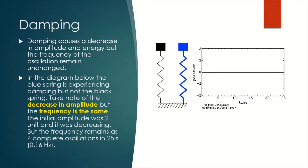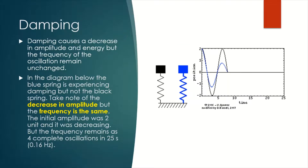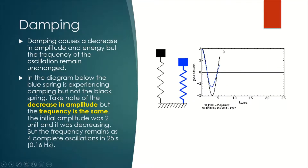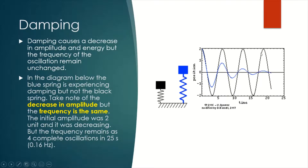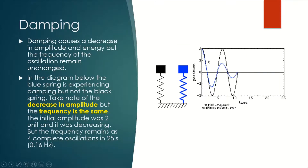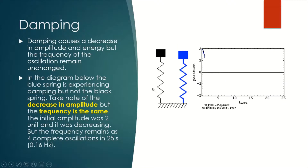But the black spring — the amplitude does not decrease, there's no change, it remains high. So there is no damping for the black spring.